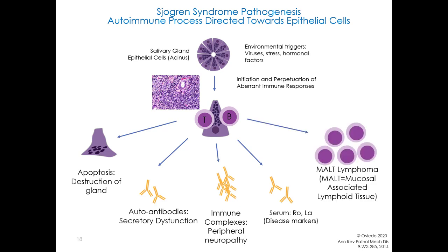Here on the right I've shown MALT lymphoma. MALT is mucosal associated lymphoid tissue — this is, of course, a B cell lymphoma.